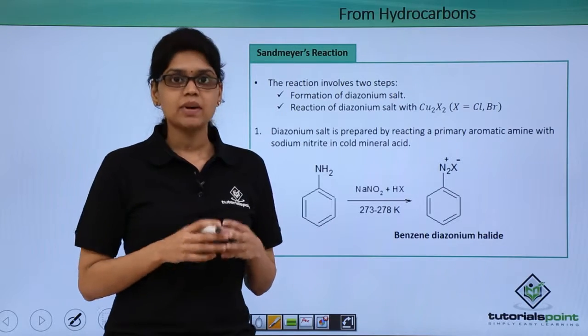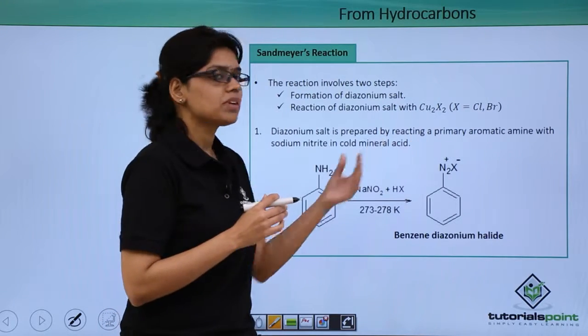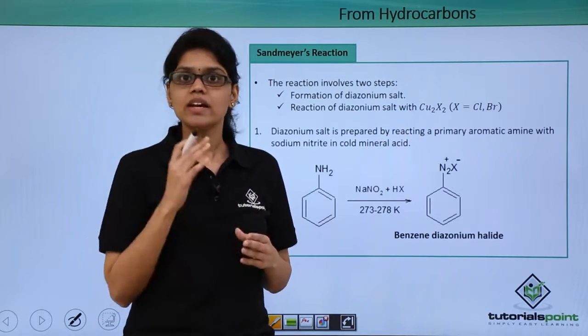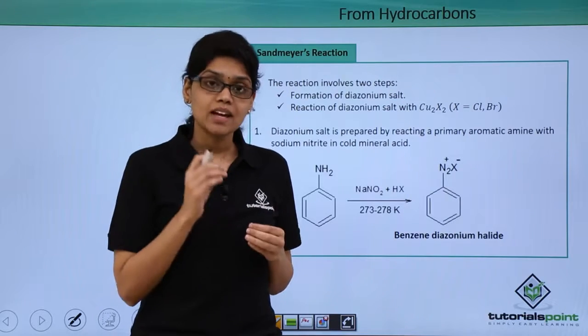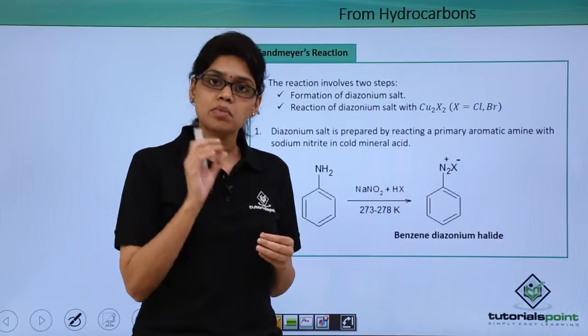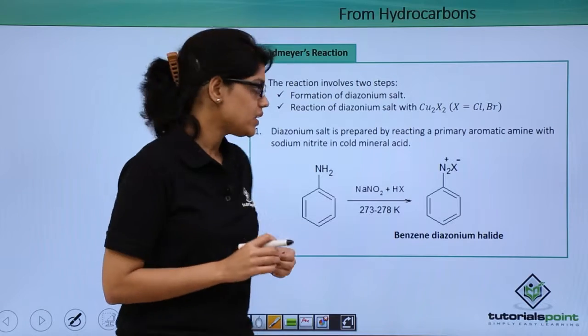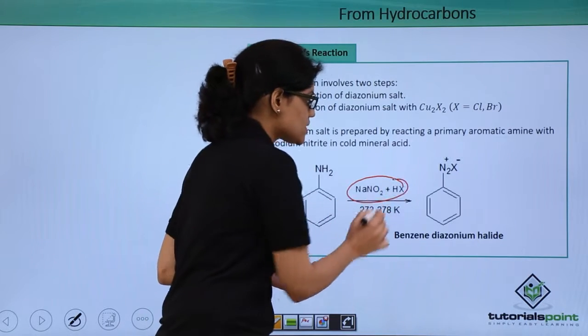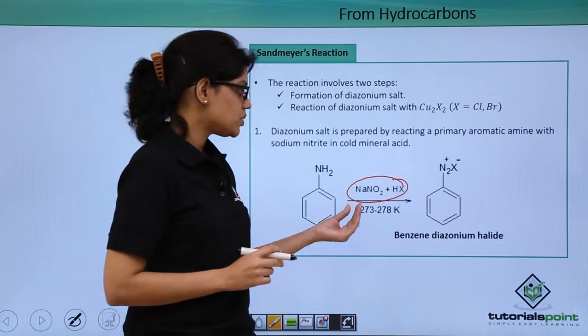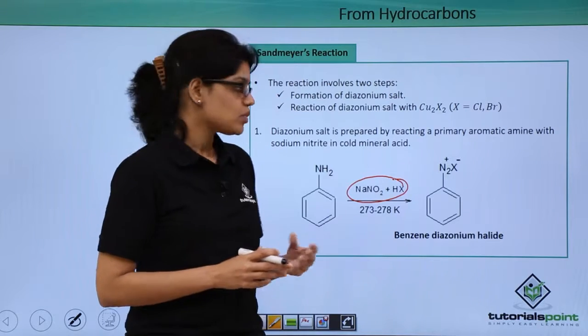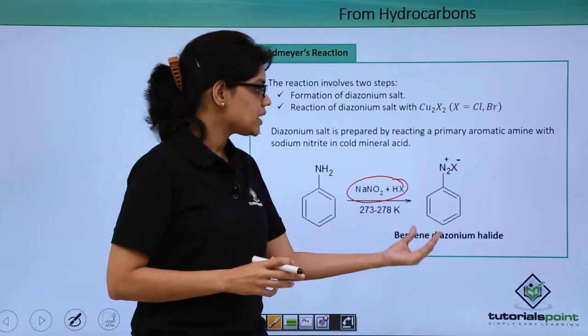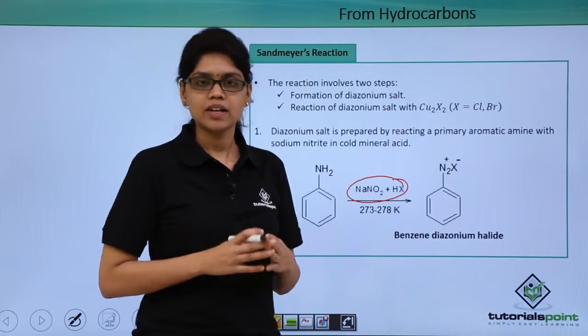Diazonium salt is prepared by reacting aromatic primary amine with nitrous acid or HNO2. HNO2 is highly reactive in nature and hence we are preparing it in situ by reacting NaNO2 with HCl between 0 and 5 degrees Celsius. When we do this particular reaction, we get benzene diazonium halide as a final product.